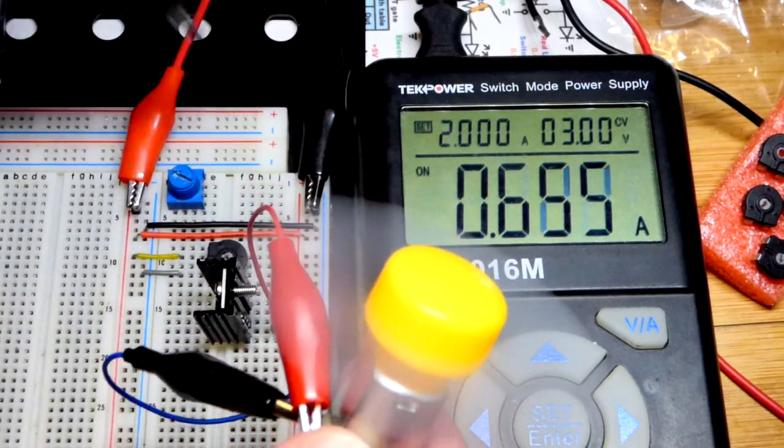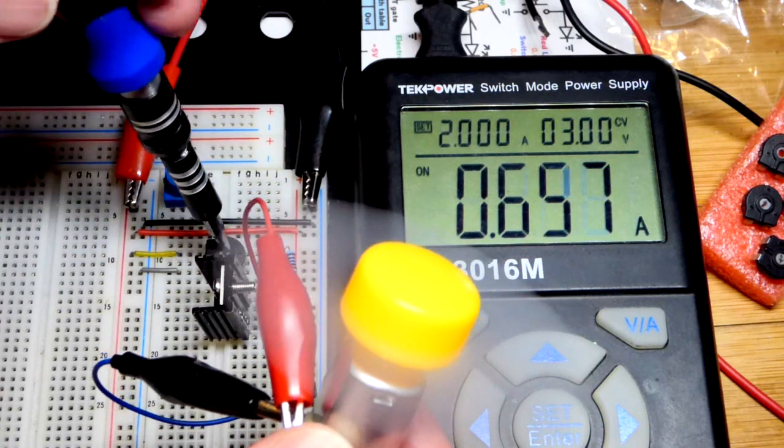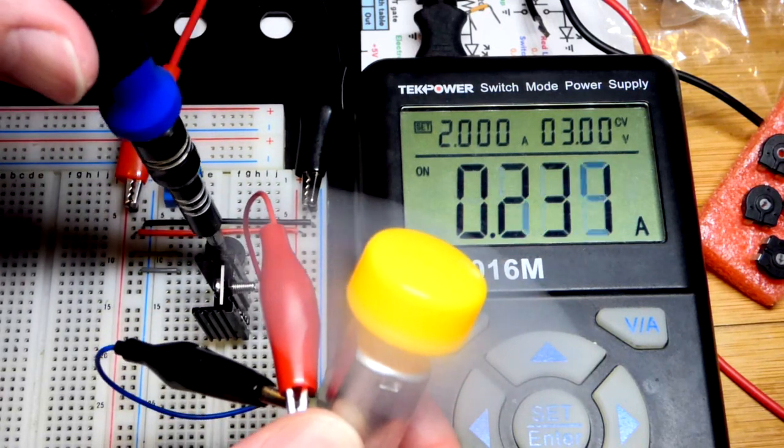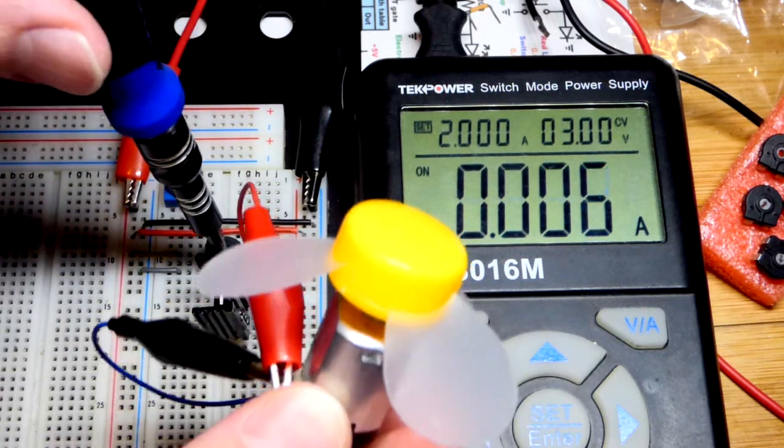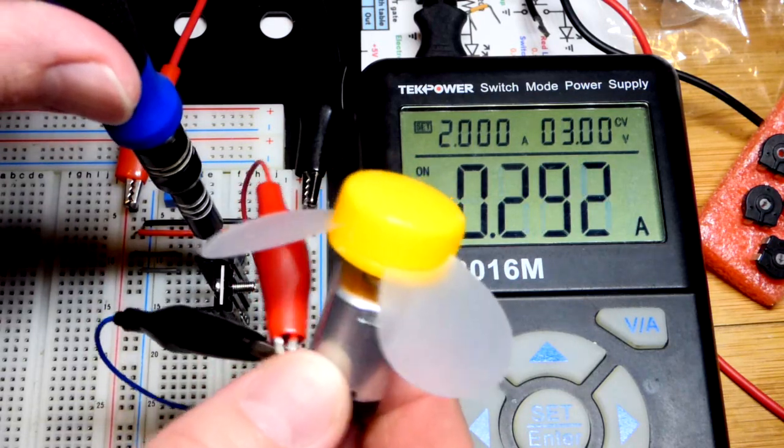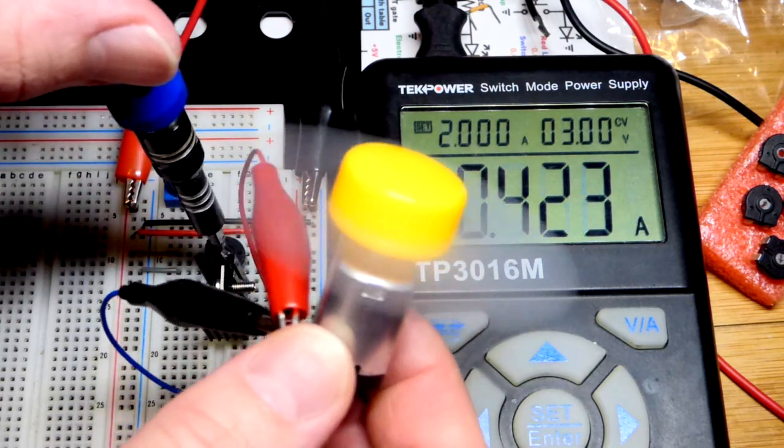The speed of the fan goes up and we have more current. Now there is the base to emitter drop, so we're going to lose about 0.6 volts as far as the current going through the motor.